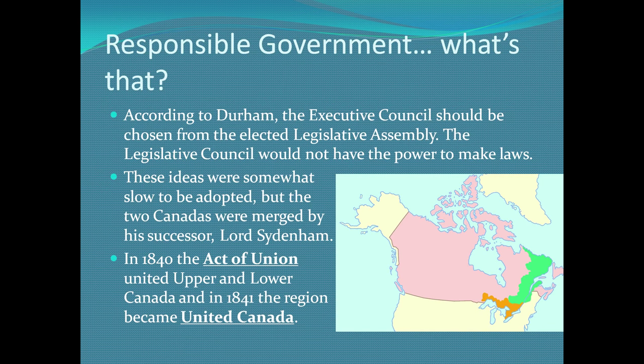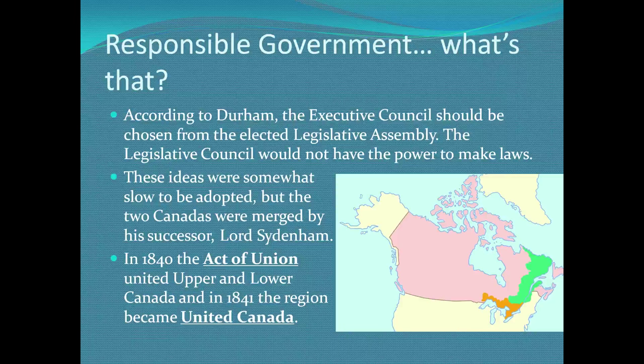Responsible government was slow to be adopted, but eventually after Lord Durham quit, Lord Sydenham — the new governor — said that wasn't such a bad idea. The two Canadas were merged in 1840 and 1841. In 1840 they passed the Act of Union, and in 1841 it became official. Upper and Lower Canada became merged as the United Canada.